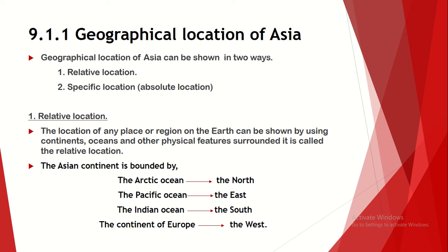Let's see the geographical location of Asia. The geographical location of Asia can be shown in two ways. We use two ways to represent the location of a place: relative location and specific location. Specific location is also called absolute location. First, we discuss what is relative location. The location of any place or region on the earth can be shown by using continents, oceans, and other physical features surrounding it — this is called relative location.